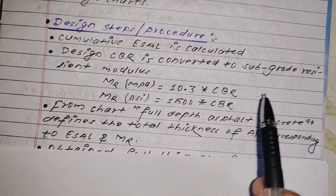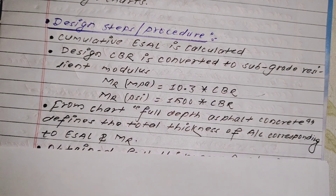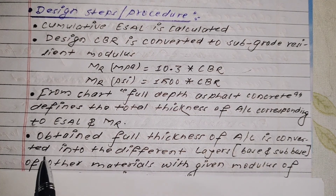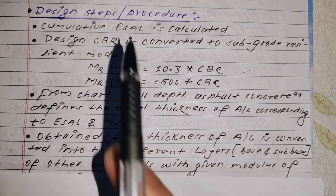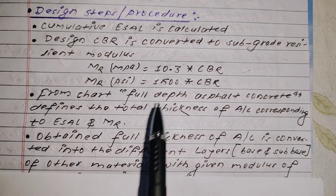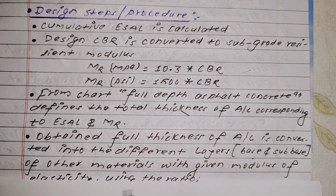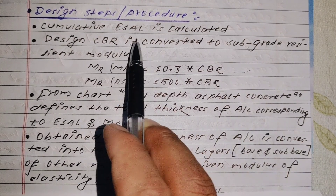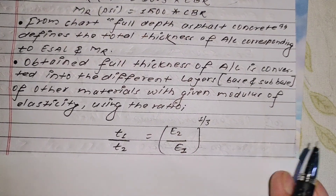After obtaining the full thickness of asphalt concrete, it is converted into different layers. The full depth obtained from the chart using ESAL and Mr values is then converted into different layers - asphalt concrete wearing course, base course or sub-base course - with given modulus of elasticity values. Using the modulus of elasticity ratio formula, we find the different layer thicknesses.